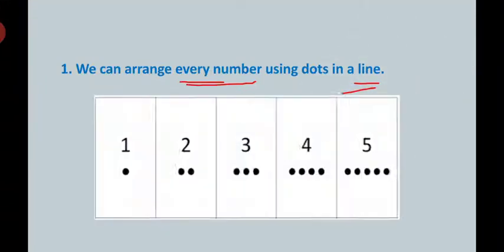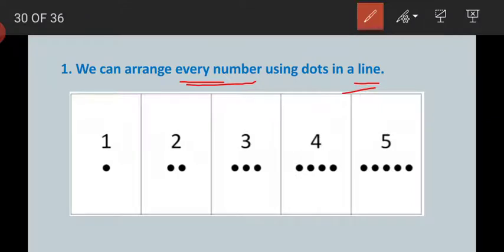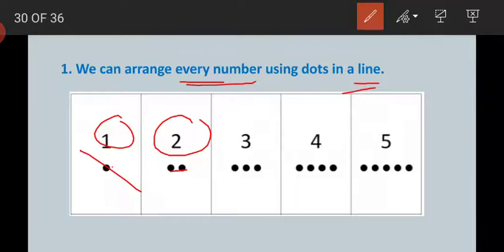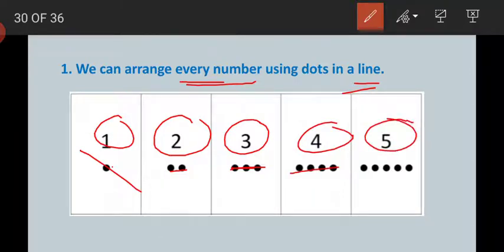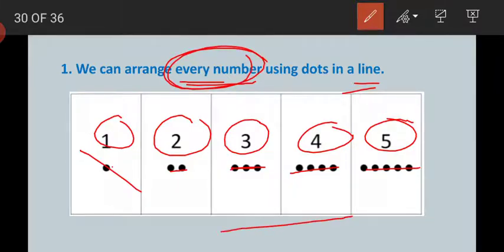By using a single dot we can make a line. By using two dots we can make a line — if we join the two dots it becomes a line. By using three dots we can also make a line. We can arrange four dots in a line, five dots in a line. Every number can be arranged in a line — there may be 100, 200, or any number.